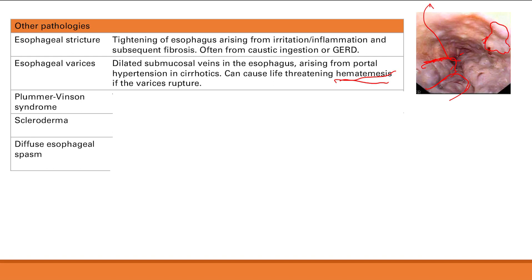Plummer-Vinson syndrome is a triad of dysphagia, iron deficiency anemia, and esophageal webs. For scleroderma, remember the CREST mnemonic: C is calcinosis, R is Raynaud's, E is esophageal dysmotility — which is why we're talking about it here — S is sclerodactyly, and T is telangiectasias.